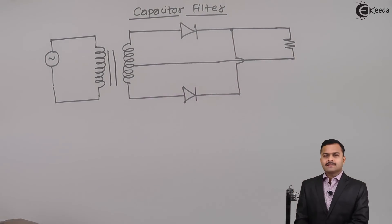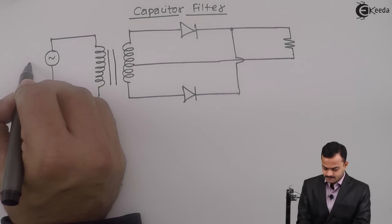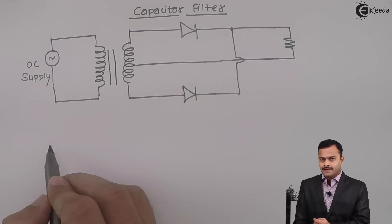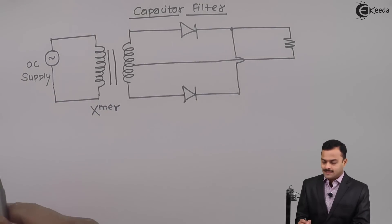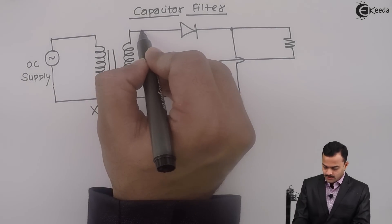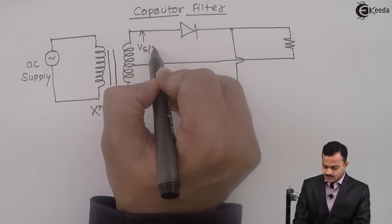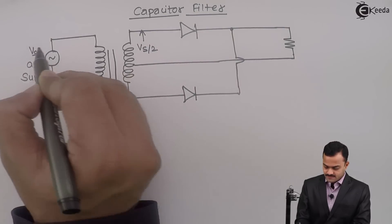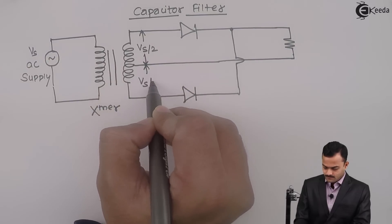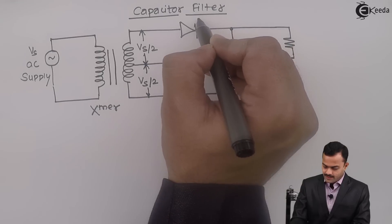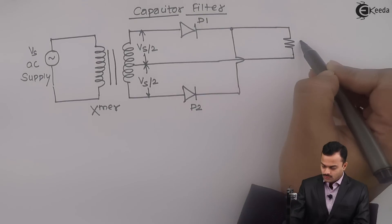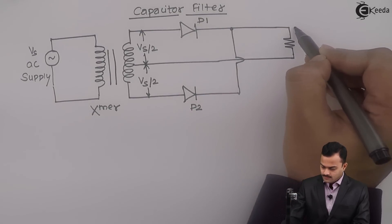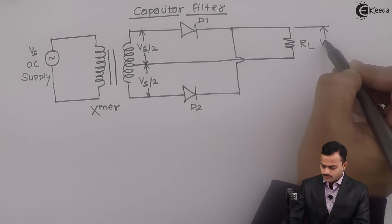So in the rectifier circuit, this is the AC supply stepping down with the help of a transformer. You are using a center tap transformer, hence voltage over here is half of the supply voltage Vs. Rectifying action is done by diode D1 and D2. This is a load resistance RL where we are getting output voltage V0.